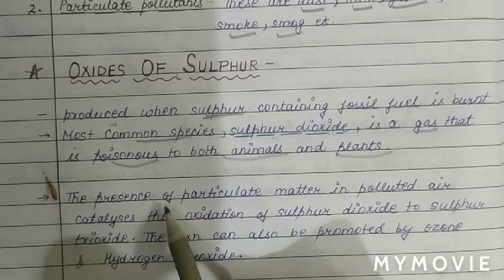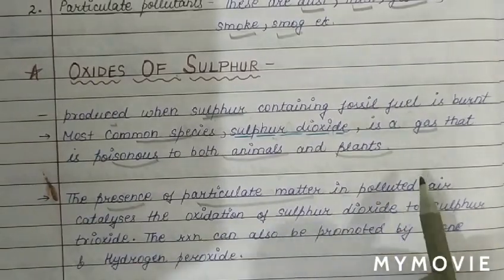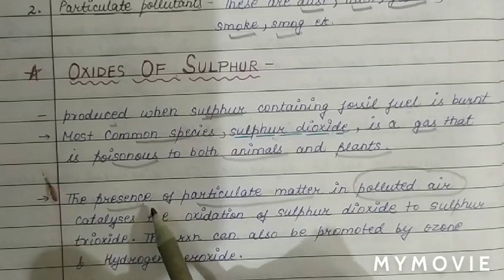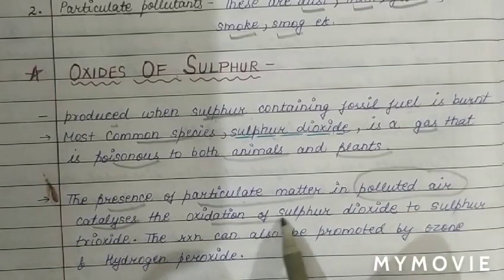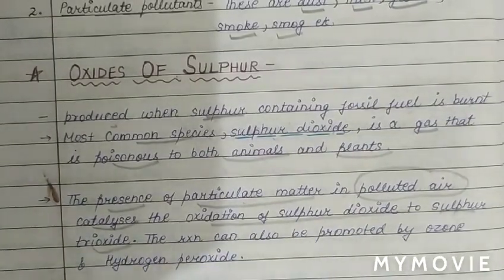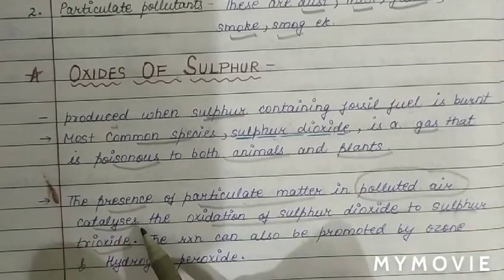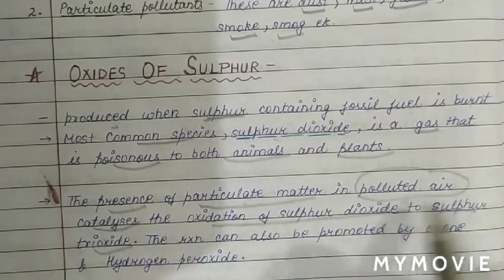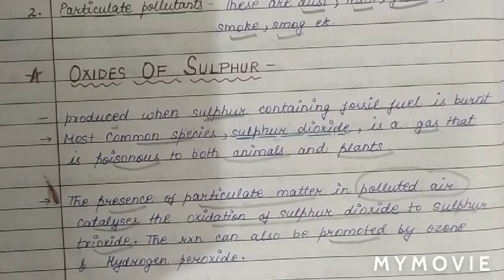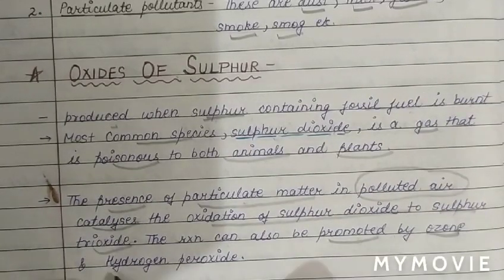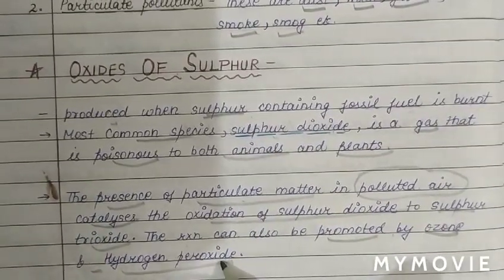The presence of particulate matter in polluted air catalyzes the oxidation of SO2 into SO3. This reaction can also be promoted by ozone and hydrogen peroxide, which act as positive catalysts (promoters) for this reaction.